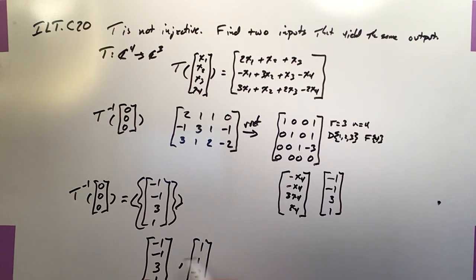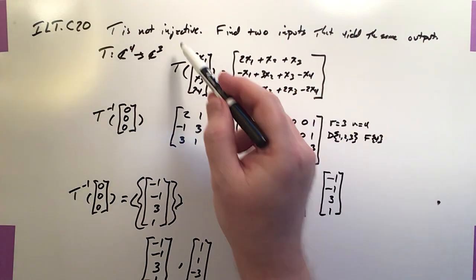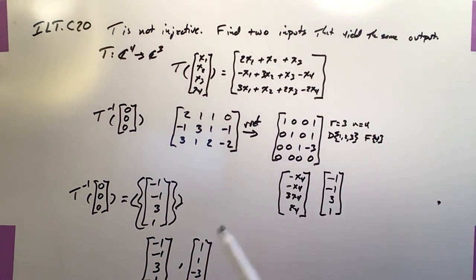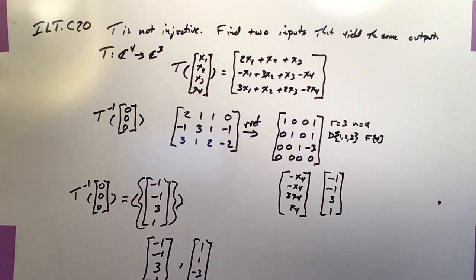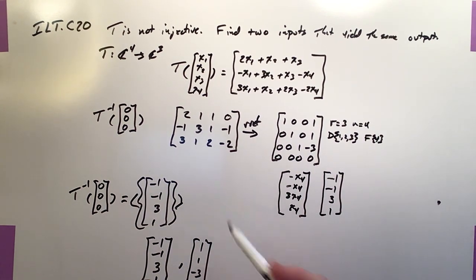And there it is. Both those will produce 0, 0, 0 as an output to this linear combination. Proving that this is non-injective. Because it has two inputs for a given output. And if you pump these back through. You'll notice that they both indeed produce 0, 0, 0. So there it is.